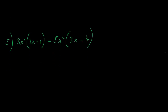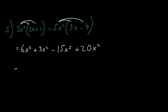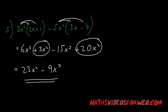And finally let's expand expression number 5. So we get 6x to the power of 3 plus 3x squared minus 15x to the power of 3 plus 20x squared. Now let's add up like terms. So we get 3x squared plus 20x squared which is 23x squared. And minus 15x to the power of 3 plus 6x to the power of 3 is minus 9x to the power of 3. So if we expand this expression here we get 23x squared minus 9x to the power of 3.